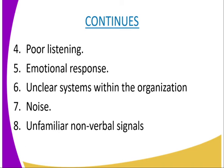Then there are unclear systems within organizations. This is a point where there is no order in which system they are passing the information. Today it is horizontal, next it is vertical — they don't have any clear system they use when it comes to the flow of information.